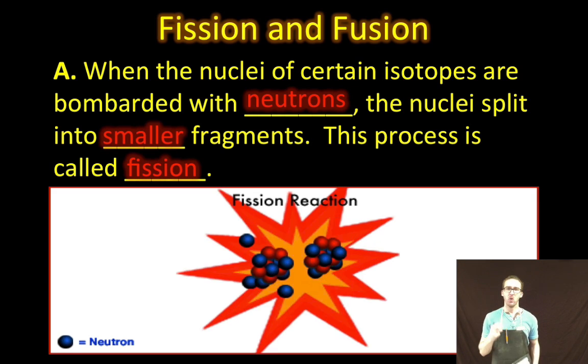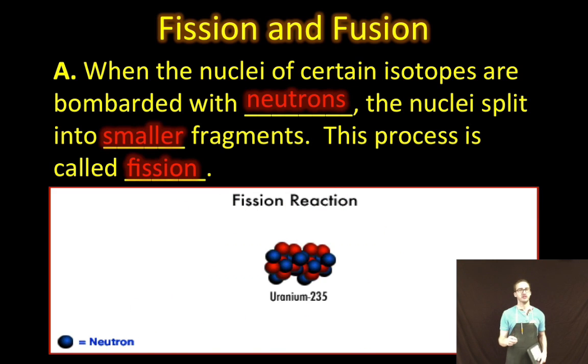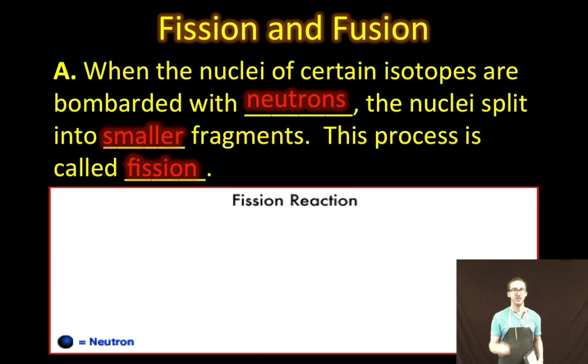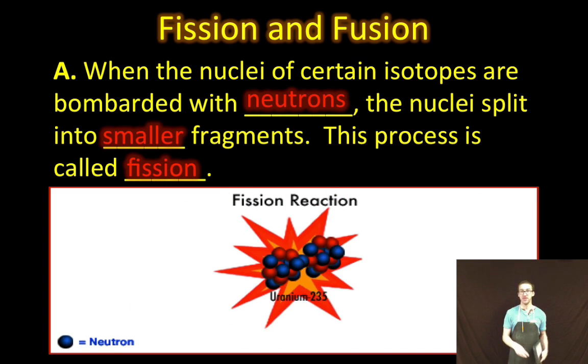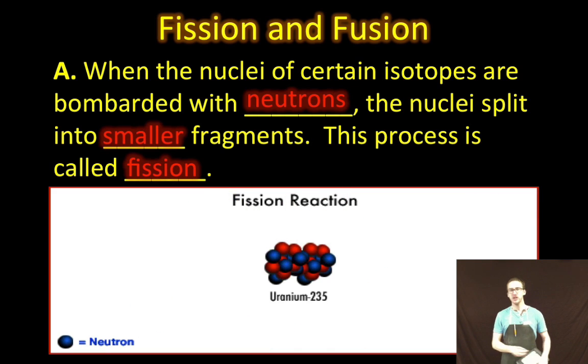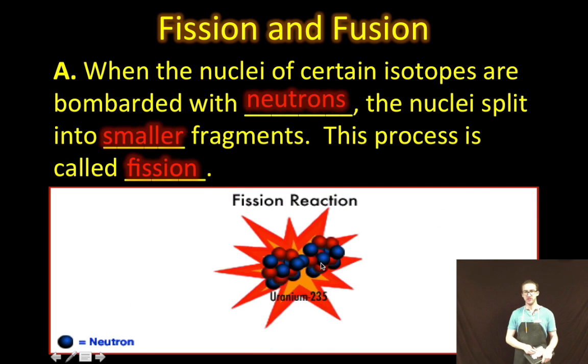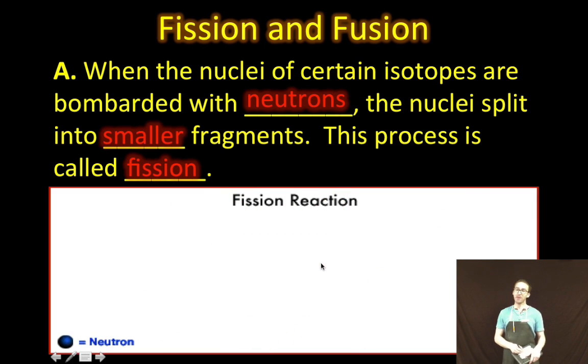Basically, when the nuclei of certain isotopes are bombarded with neutrons, the nuclei split into smaller fragments, and that process is called fission. So check out this animation. Notice that what happens is a neutron comes flying in, causing the fission of this uranium-235 atom, or nucleus. It splits into smaller fragments. This process is known as fission.